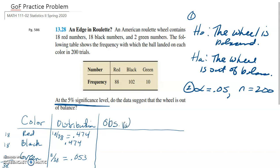Our observed values are what are given in the problem itself. We know out of our 200 trials, 88 were red, 102 black, and 10 green.